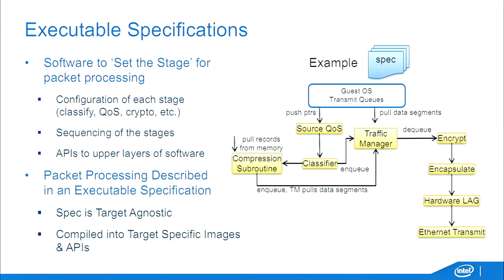You end up with a target-agnostic spec that you can run and test and throw packets through. It keeps you above the fray — if you were working on a project for half a decade, you don't get stuck in the mindset that the thing you've been working on only works in one way. P4 gives you that target-agnostic zone, and that's really important for trying to map it to multiple different architectures.